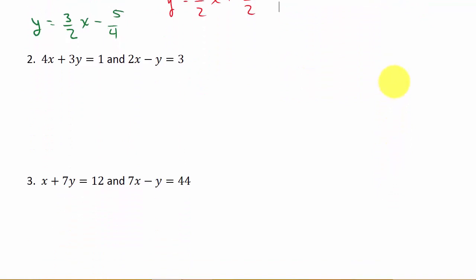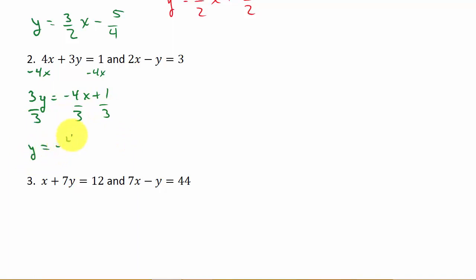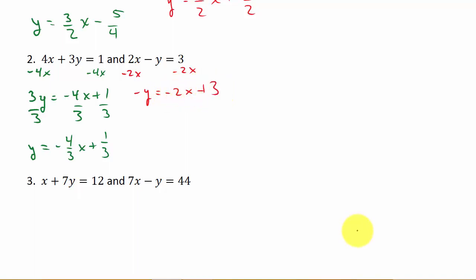Let's look at the next example and solve each equation for y. I'll subtract 4x from both sides to get 3y equals negative 4x plus 1, then divide each term by 3, giving y equals negative 4 thirds x plus 1 third. For the other equation, I'll subtract 2x from both sides to get negative y equals negative 2x plus 3, then divide everything by negative 1, giving y equals 2x minus 3.